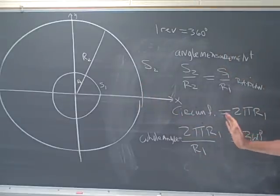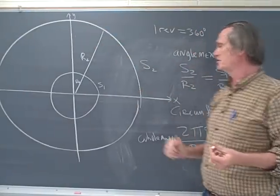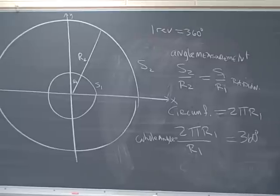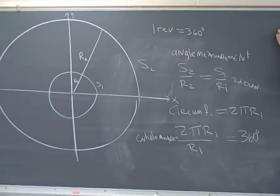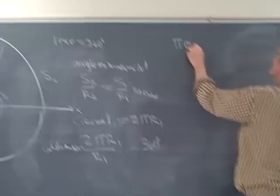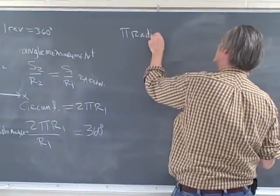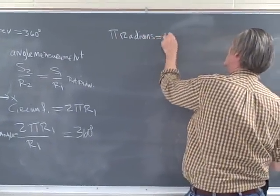So we've got 2π is 360 degrees. Angles are measured in the counterclockwise direction. Positive angles are measured in the counterclockwise direction. And we get π radians is equal to 180 degrees.